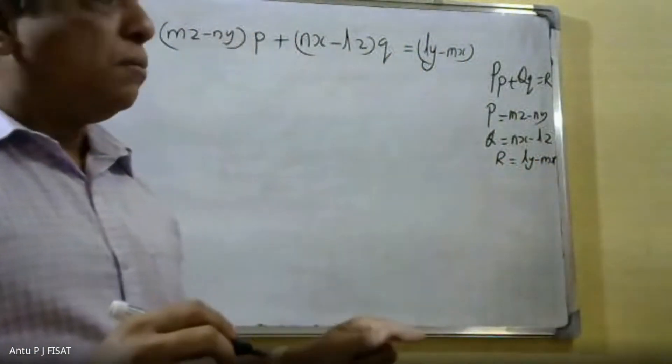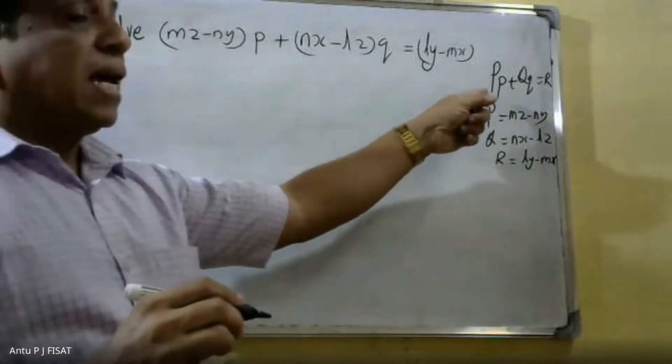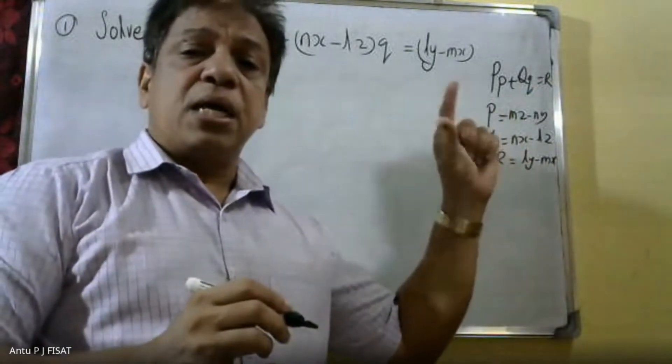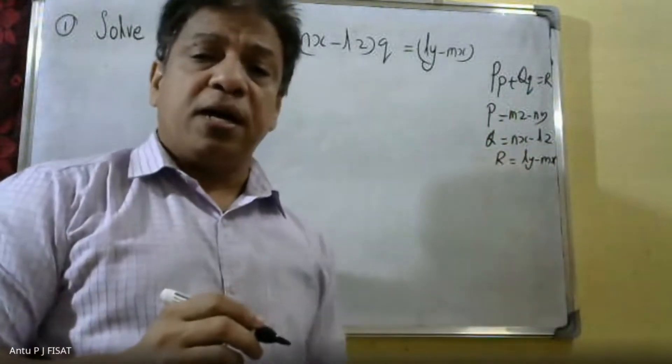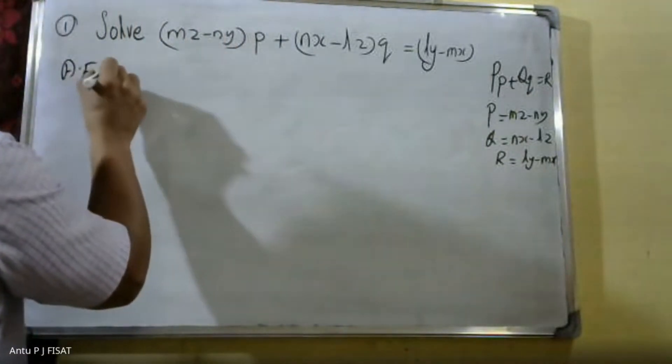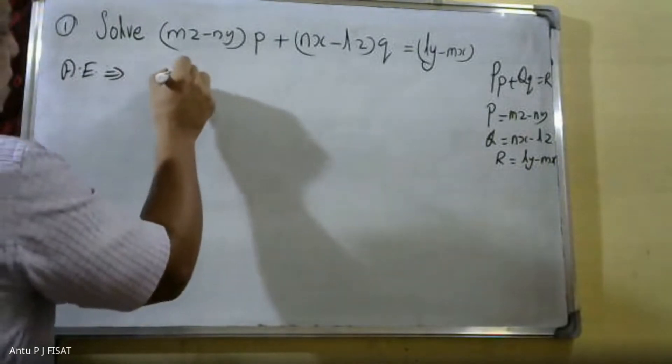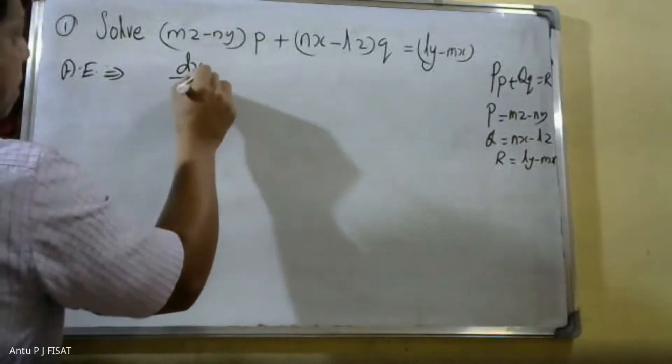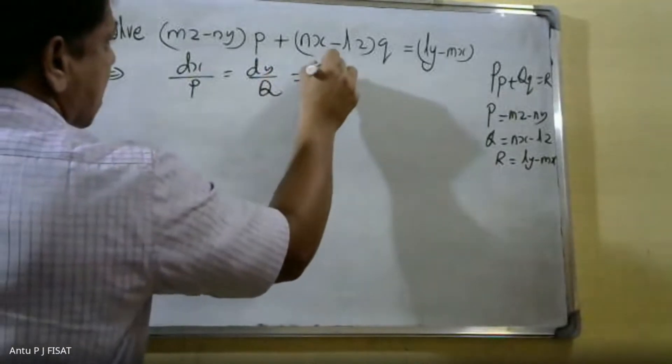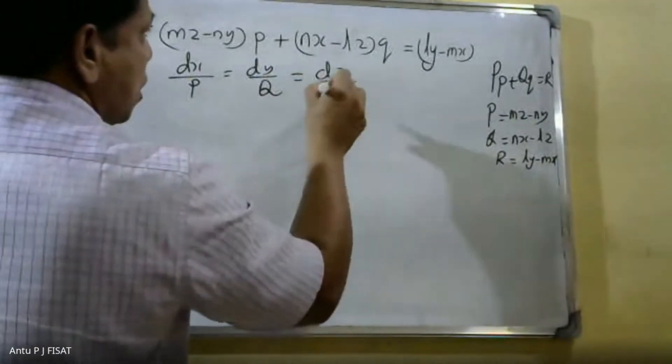Then Pp + Qq = R, so this equation is a Lagrangian partial differential equation. The auxiliary equation is u = a and v = b. The formula is dx/p = dy/q = dz/r.